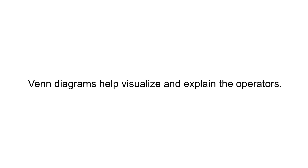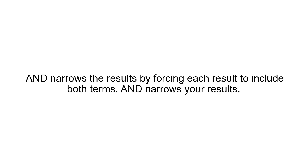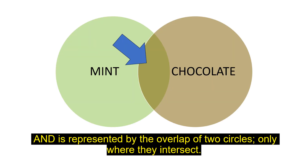Venn diagrams help visualize and explain the operators. AND narrows the results by forcing each result to include both terms. AND is represented by the overlap of two circles, only where they intersect.